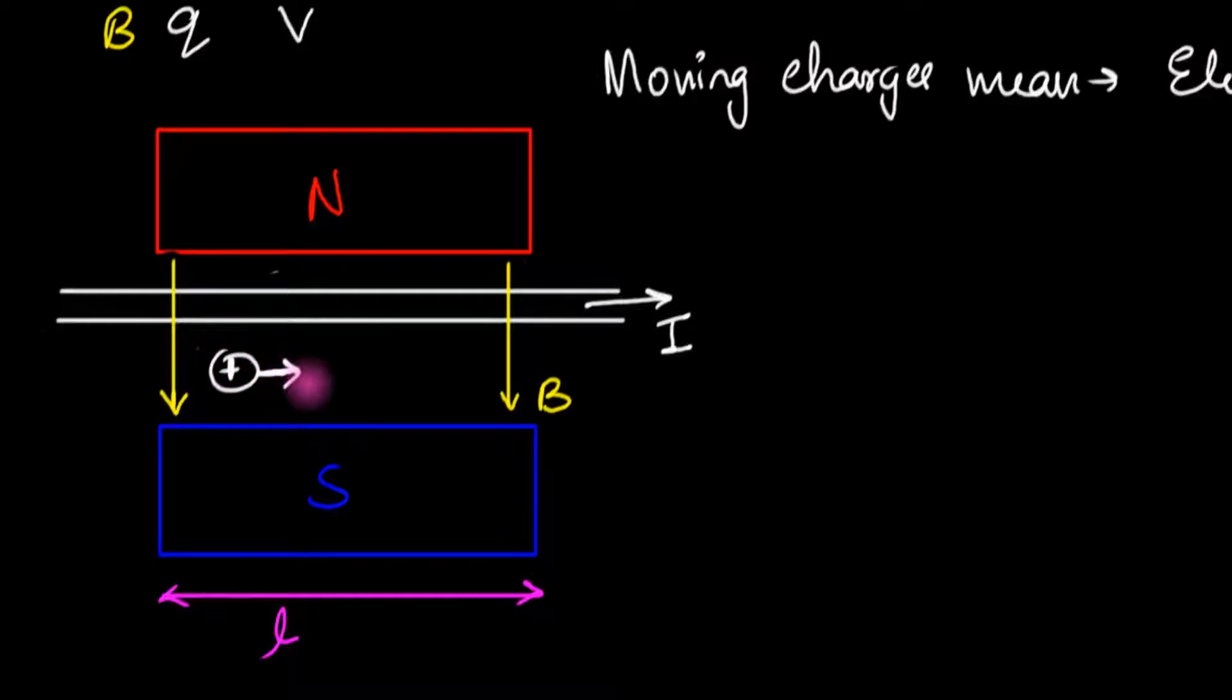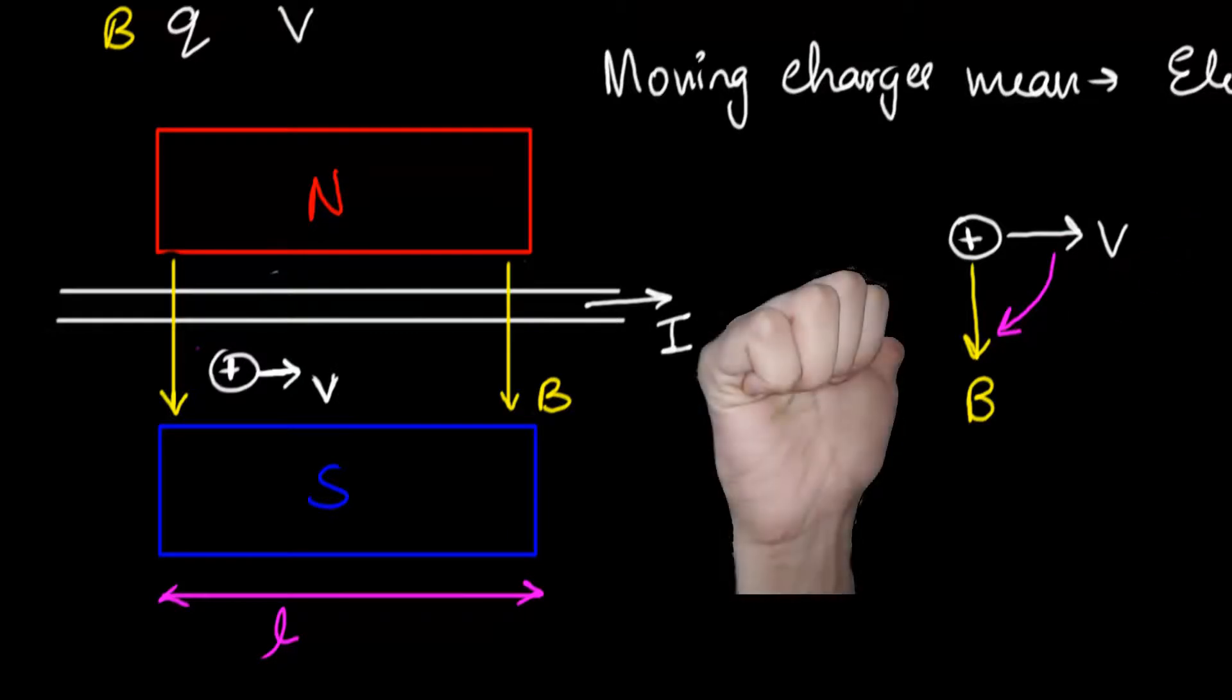Well notice that if you have a current towards the right, it's the same as saying that there are positive charges moving towards the right with a velocity V. And therefore we now have a positive charge which is moving towards the right with a velocity V. And we have a magnetic field at that point which is pointing downwards. And so V cross B tells us that there must be a force acting on that charge. And that force must be, according to our right hand rule, if you do a cross product, you get the answer to be into the book or into the screen in this example. So the force must be into the screen.